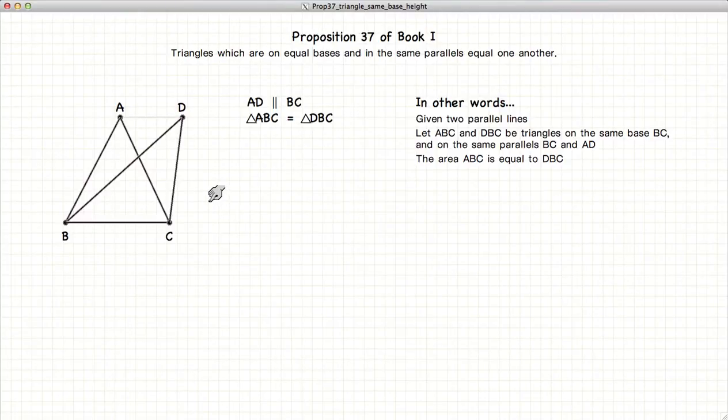And to demonstrate this, first we're going to extend the line AD in either direction. The next thing we're going to do is to draw a line that is parallel to AC starting at point B.